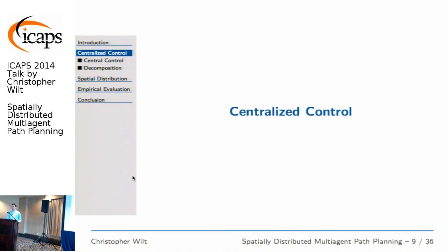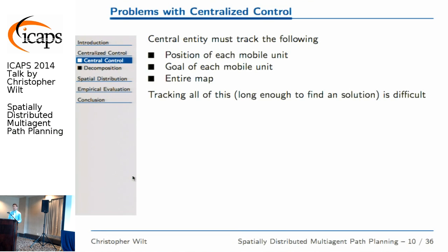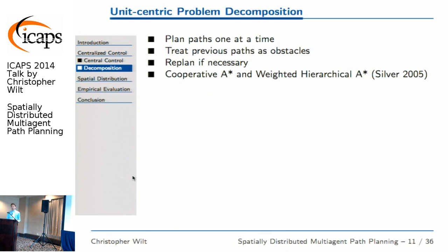So how is this often accomplished? Most approaches published in the literature rely on some form of centralized control — a central agency able to track where each mobile unit is, where it's trying to go, and what the entire map looks like. The problem is that tracking all three of those things long enough to find a solution is computationally intensive. A lot of approaches take what we call unit-centric decomposition: you plan each mobile unit one at a time, treating previous paths as obstacles, possibly re-planning. Cooperative A* and weighted hierarchical A* are examples of algorithms that take this approach.